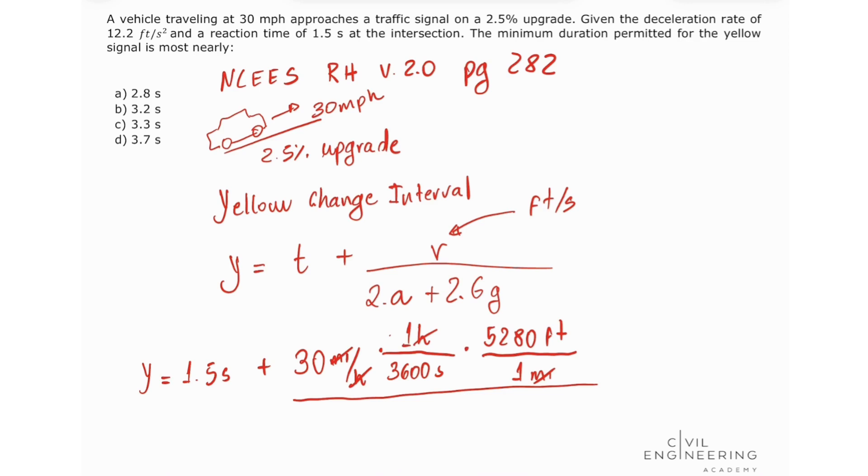This divided by 2 times 12.2 plus 2 times the big G, which is our grade of approach. We got 2.5 percent, so this is going to be 2.5 divided by 100, times the gravity, 32.2. Let's solve this.